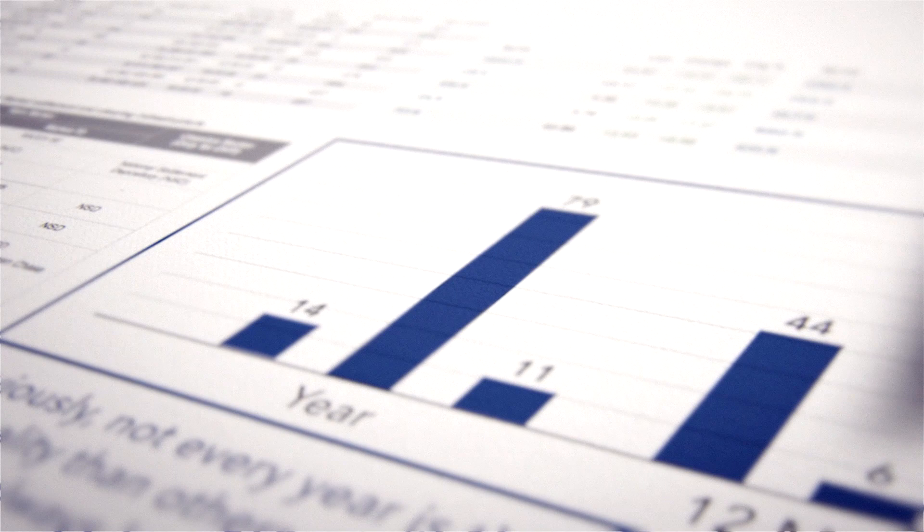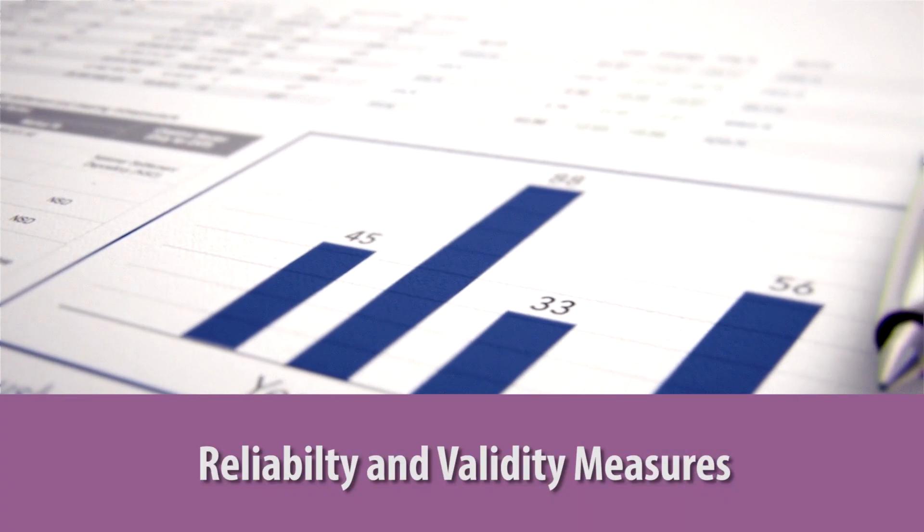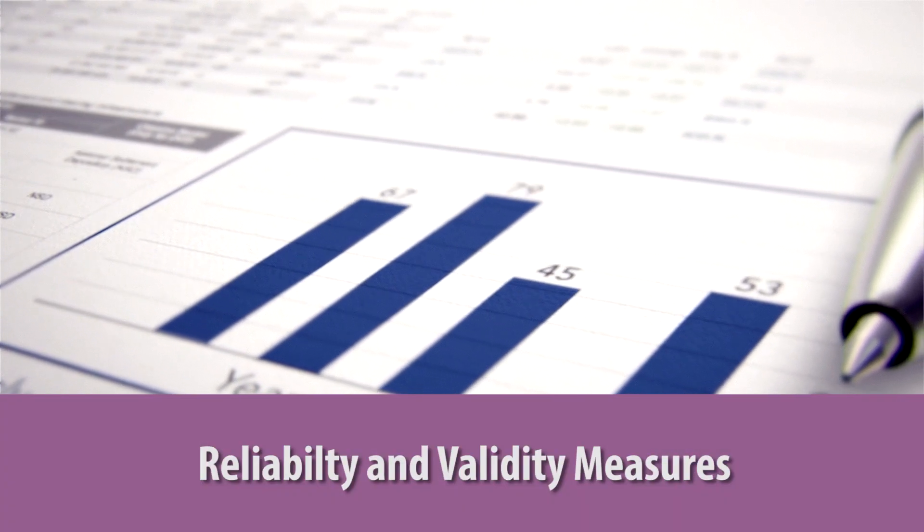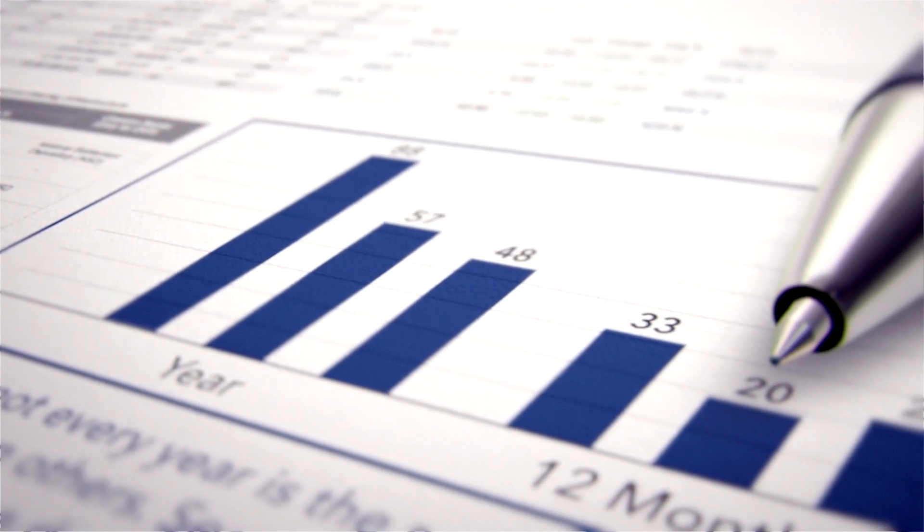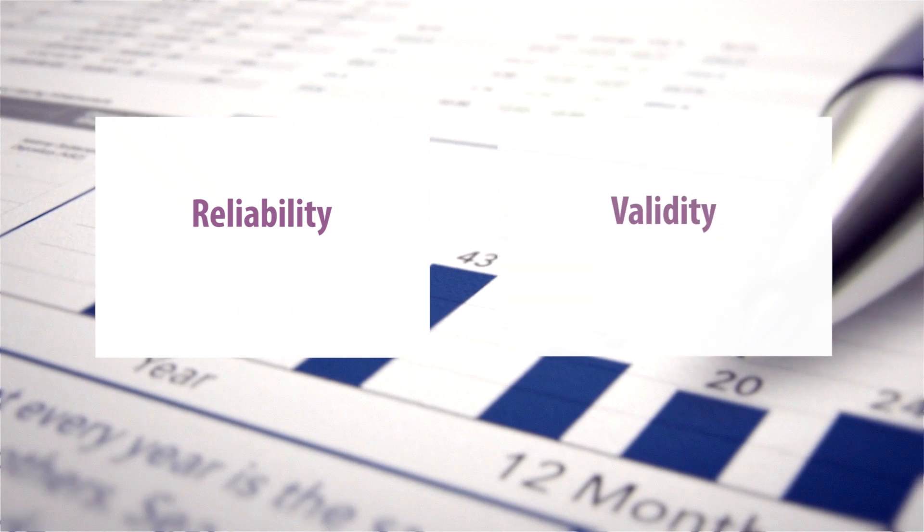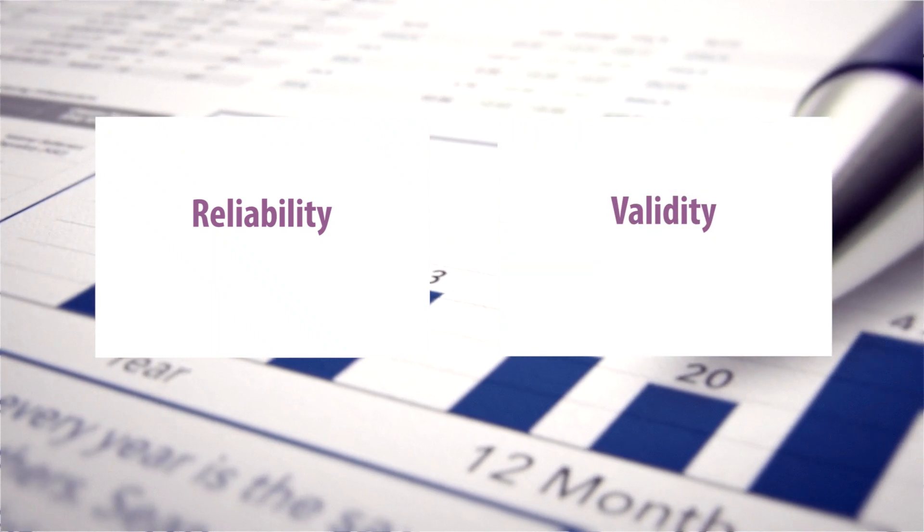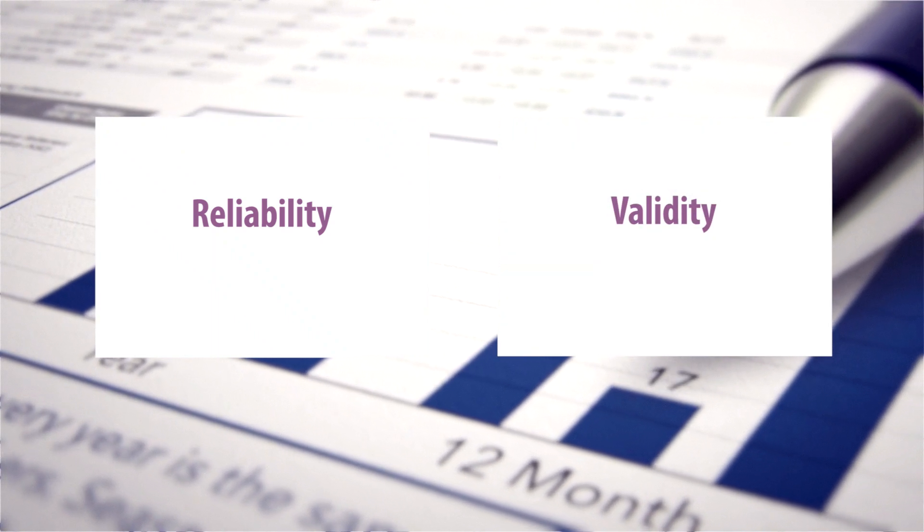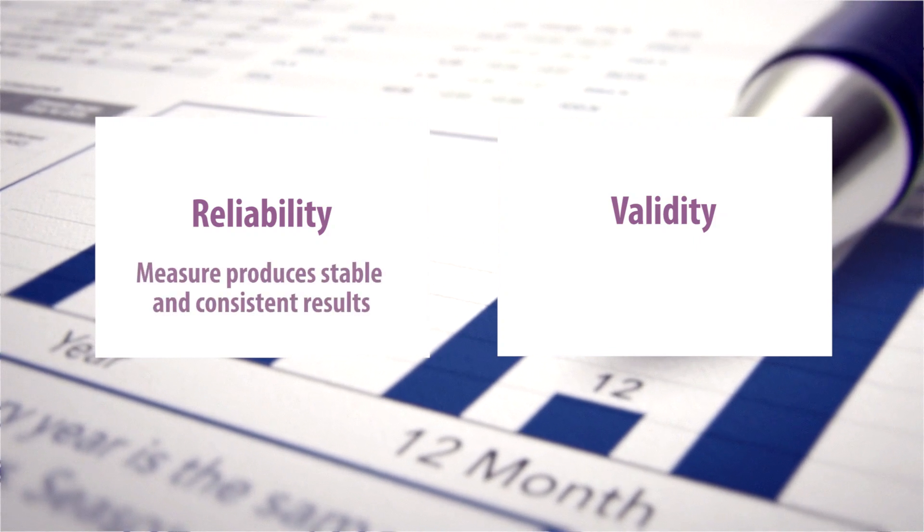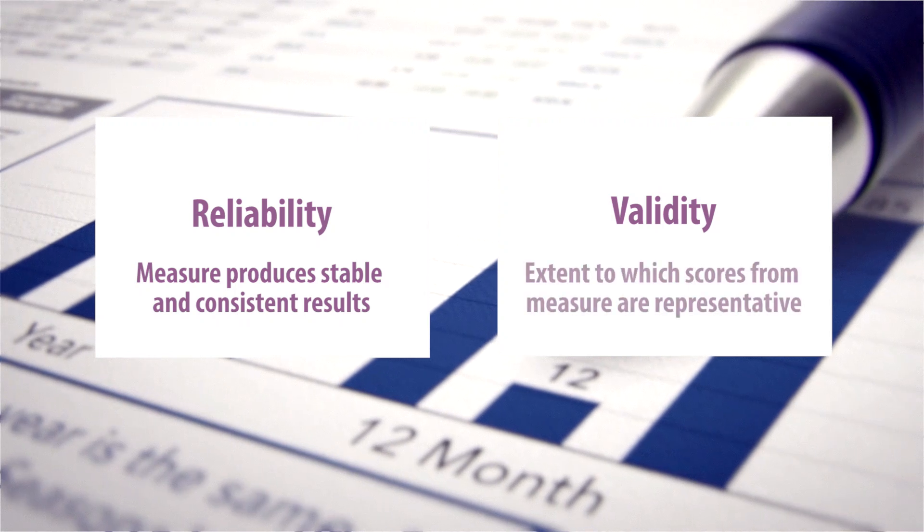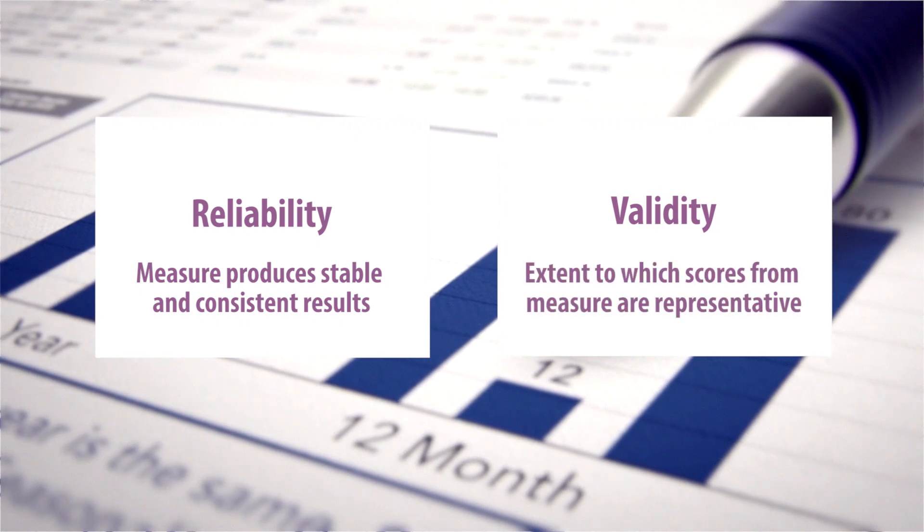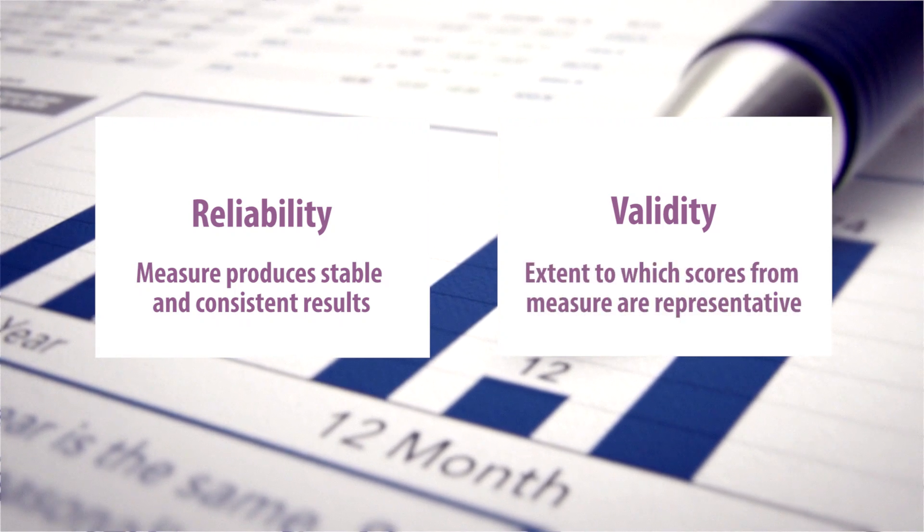Another important component of research is the quality of the study measures. Poorly designed measures lead to faulty data, which lead to flawed conclusions. Reliability and validity are critical for helping to evaluate the quality of the measures. Reliability is the extent to which a measure produces stable and consistent results. Validity is the extent to which the scores from a measure represent the variable they are intended to.